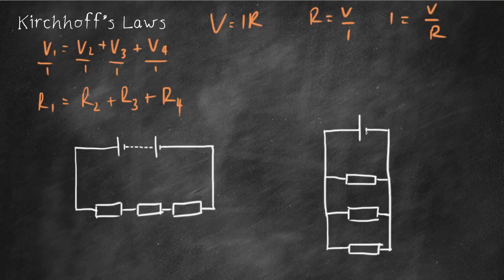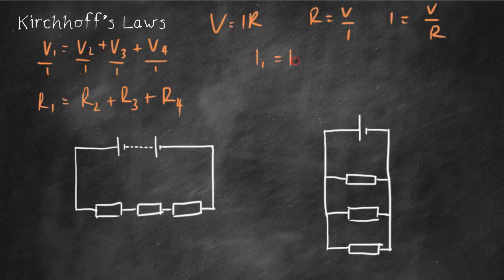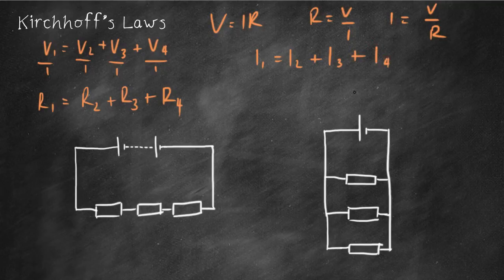Trickier still, then, is this one, the parallel circuits. And in this case, it is I that changes. I1 is equal to I2 plus I3 plus I4.